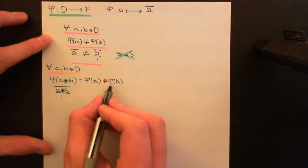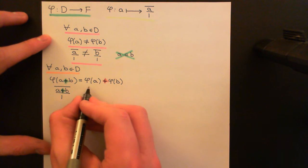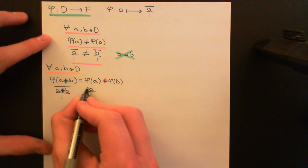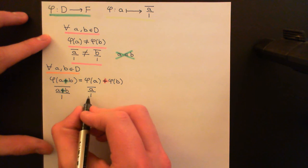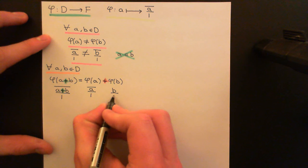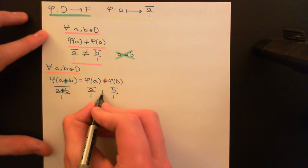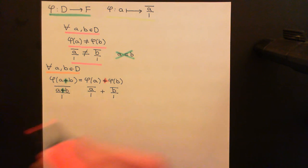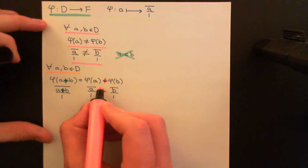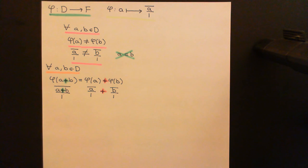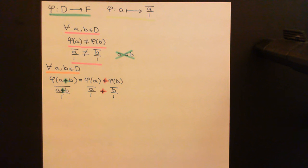Now let's look at the right-hand side. We map A and B into the fraction field: A is mapped onto the equivalence class containing A over 1, written as [A/1], and B is mapped onto [B/1]. We now want to add these together in the fraction field, and hopefully obtain the same result as the left-hand side — confirming that addition in this sub-portion of the fraction field is compatible with addition in the integral domain.